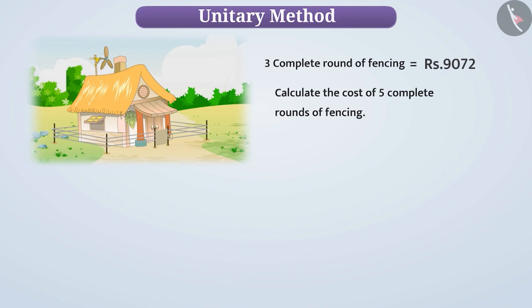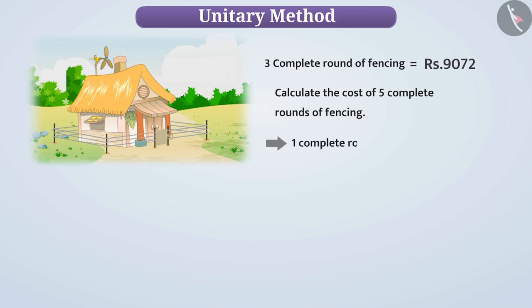Can it be calculated? Think for a while. The easiest way would be to find the value of one round of fence first, and then using that value, calculate the value of five rounds of fence.